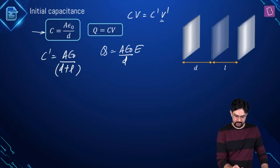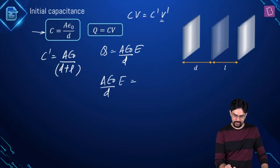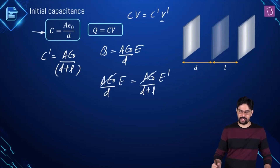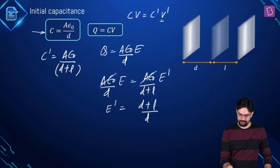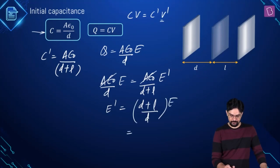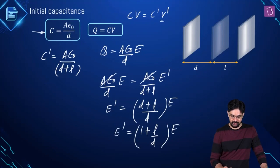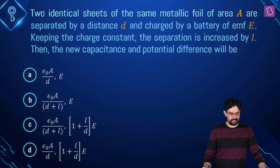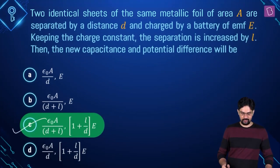From the equation, Aε₀ cancels from both sides, giving E' = (D+L)/D times E, which simplifies to (1 + L/D) times E. This is the new potential difference between the two plates, and option C is the correct answer.